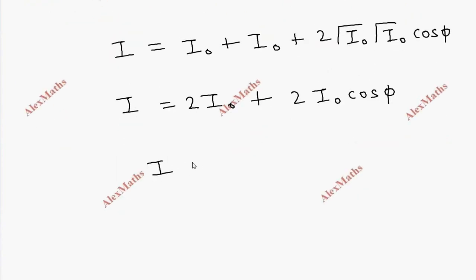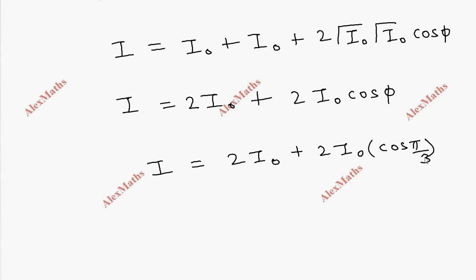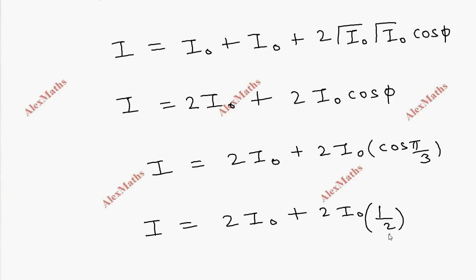So I equals 2I₀ plus 2I₀ multiplied by cos(π/3). Since cos(π/3) equals 1/2, I equals 2I₀ plus 2I₀ into 1/2.